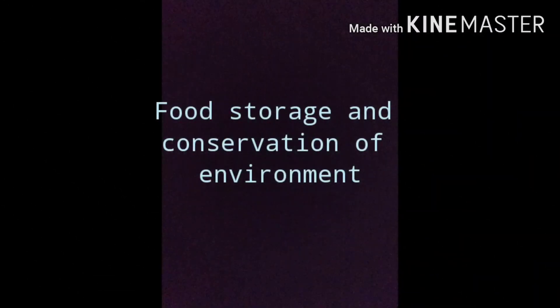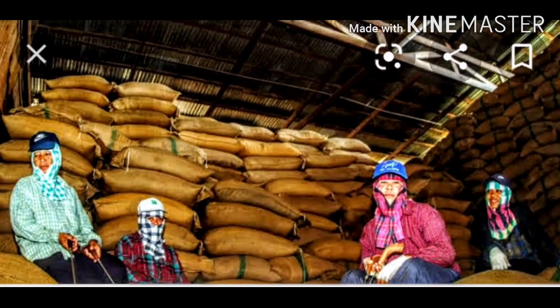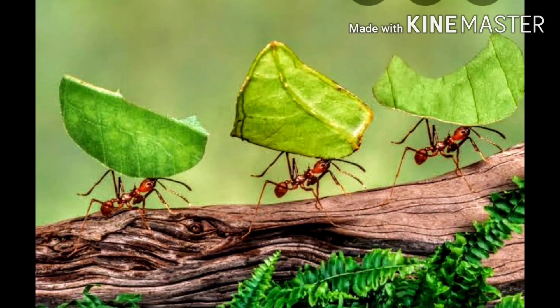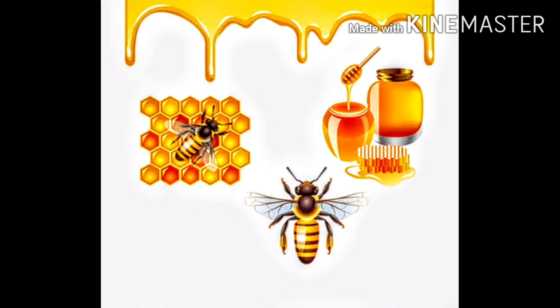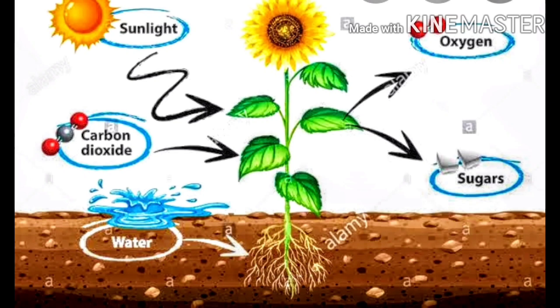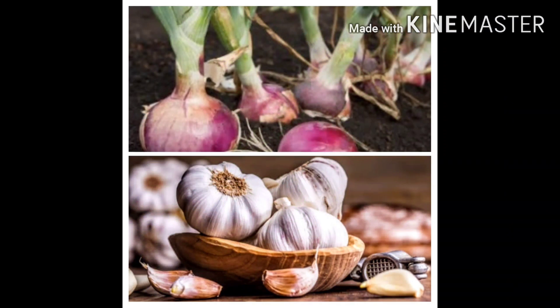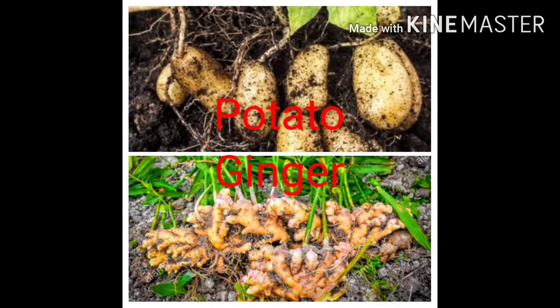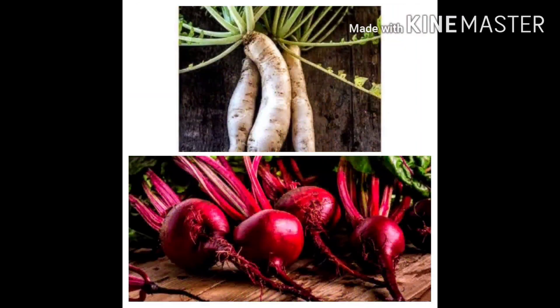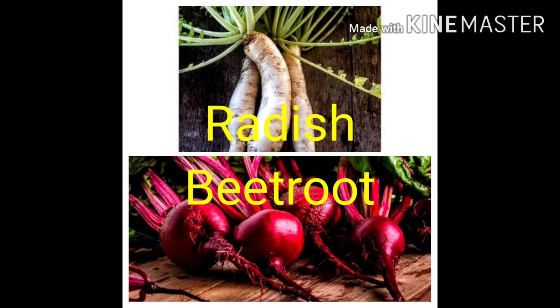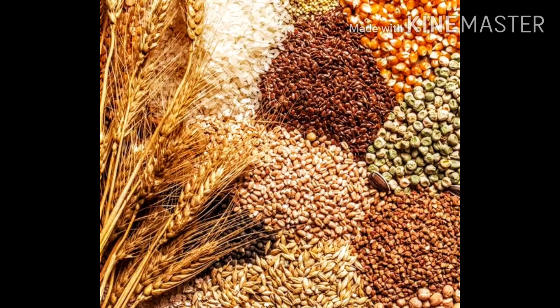Regarding food storage and conservation: humans and other living beings store food. Ants store food; bees collect nectar from flowers and store it in honeycombs as honey; squirrels also store seeds. Plants also store their food — bulbs such as onion and garlic, tubers such as potato and ginger are all parts of a plant's stem, while radish and beetroot are roots. Plants store food in stems or roots.